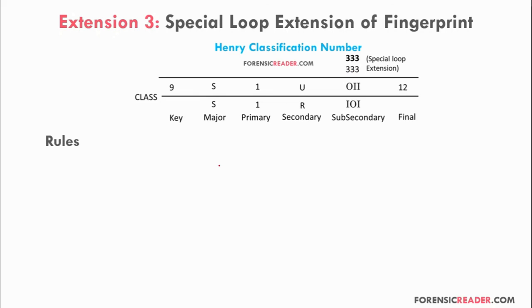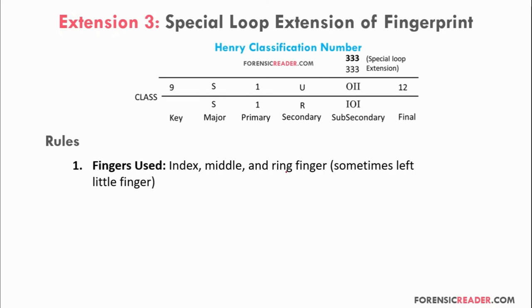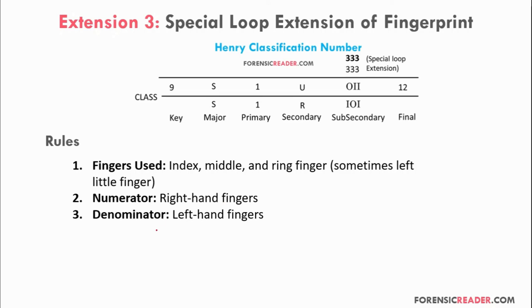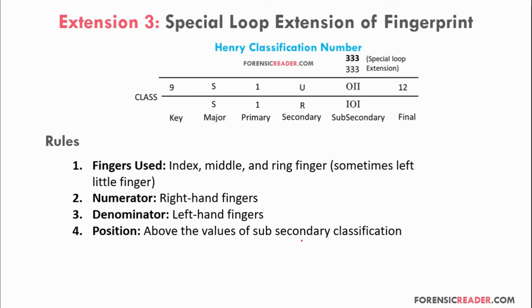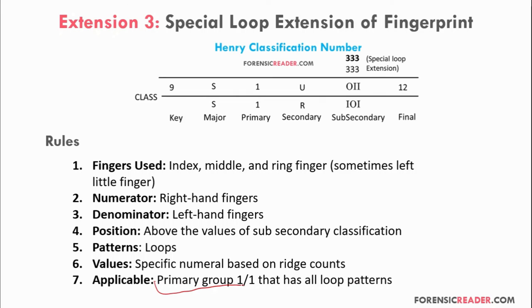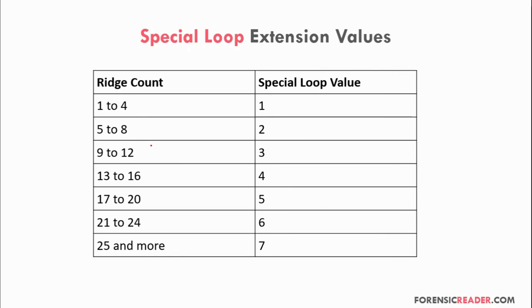The third extension is the special loop extension. Index, middle, and ring fingers are used; in some cases the left little finger is also employed; right hand values go in numerator, left hand in denominator; values are placed above sub-secondary classification. Only loop patterns are used, and this extension is applicable to smaller primary groups like 1/1. The special loop values are based on the ridge count value — for example, if the ridge count is 15, it falls into a specific group and the special loop value is 4.